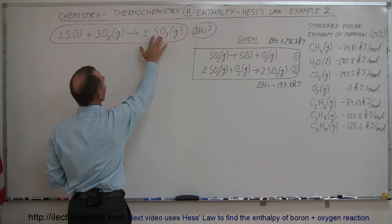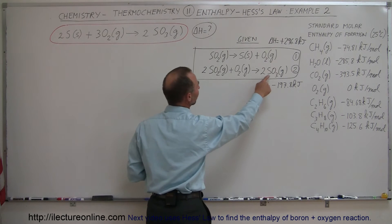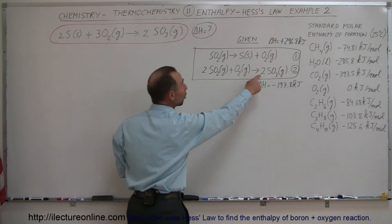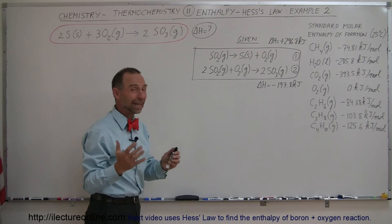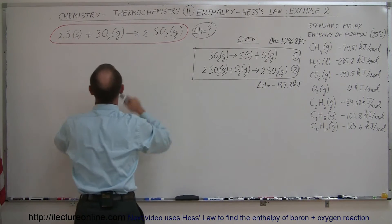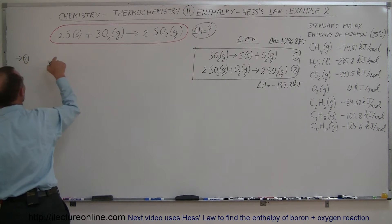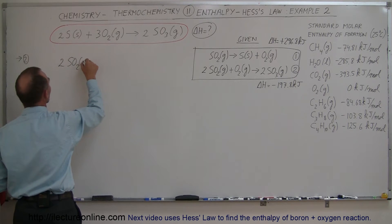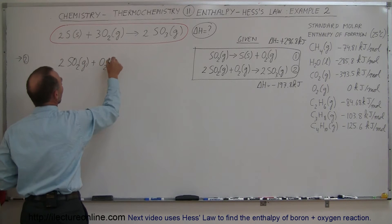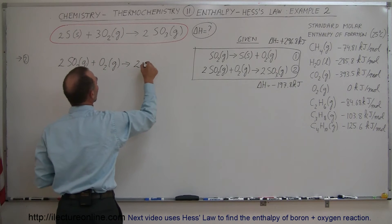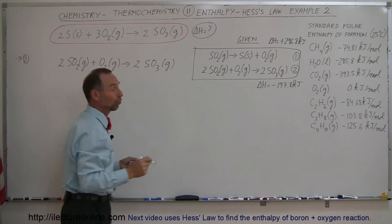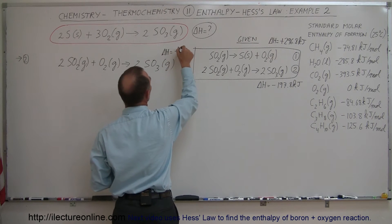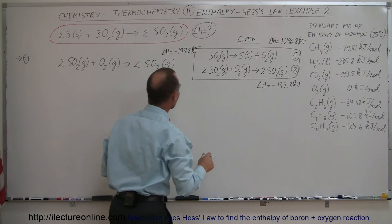Notice that in our target equation I have sulfur trioxide on the right side, and I look at equation two and also have sulfur trioxide on the right side. I need two moles of it and there are two moles of it there. So I'll take equation number two and place it directly — two moles of sulfur dioxide gas plus one mole of oxygen gas gives two moles of sulfur trioxide gas — with the corresponding enthalpy change ΔH = −197.8 kilojoules.